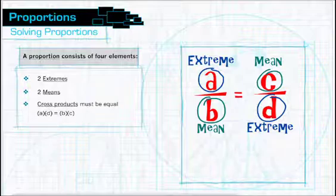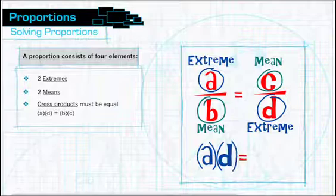The cross products must be equal. This means that multiplying the extremes, A times D, must equal the product of the means, B times C.